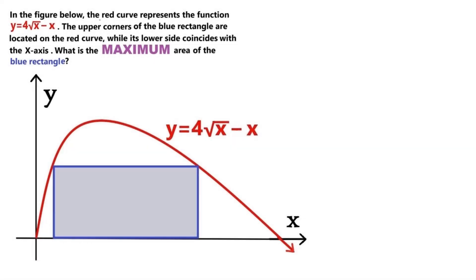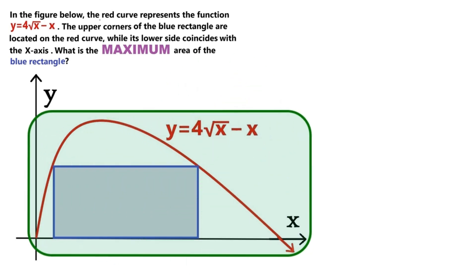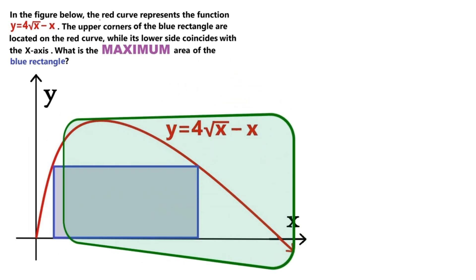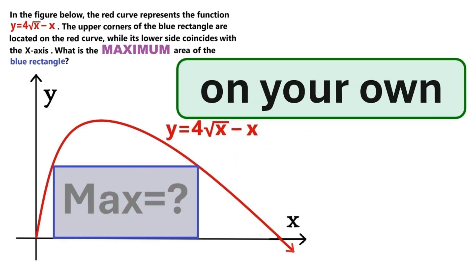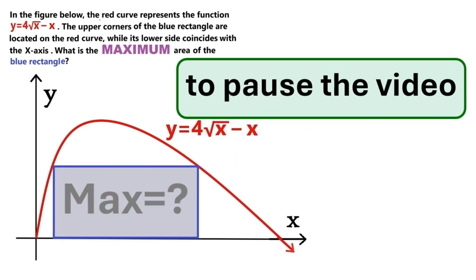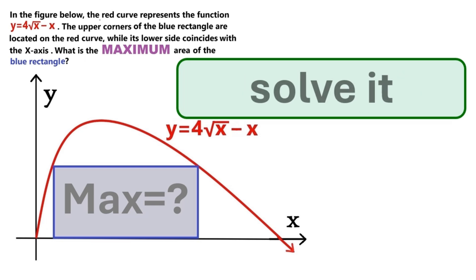In this challenging but fun analytical geometry problem we've got this extremely cool function shown by this red curve on the coordinate plane and this blue rectangle is crammed between the red curve and the x-axis. We know absolutely nothing about the width or the height of the rectangle and we need to find its area, but not just any area. We are looking for the largest possible area this rectangle can have. So if you want to try this on your own, now is the time to pause the video because I'm starting to solve it right now.